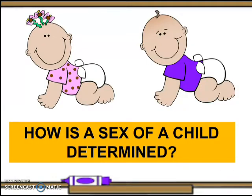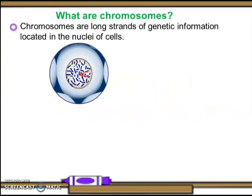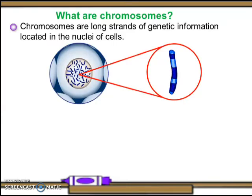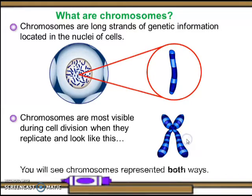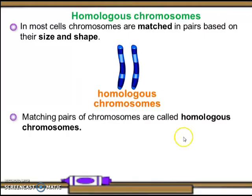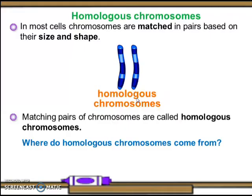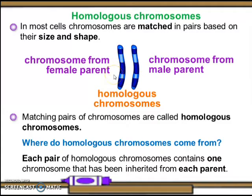How is the sex of a child determined? Let's elaborate. Chromosomes are long strands of genetic information located in the nuclei of the cells. Chromosomes are most visible during cell division when they replicate. You will see chromosomes represented both ways. In most cells, chromosomes are matching pairs based on their size and shape. Matching pairs of chromosomes are called homologous chromosomes. Each pair of homologous chromosomes contains one chromosome inherited from each parent.